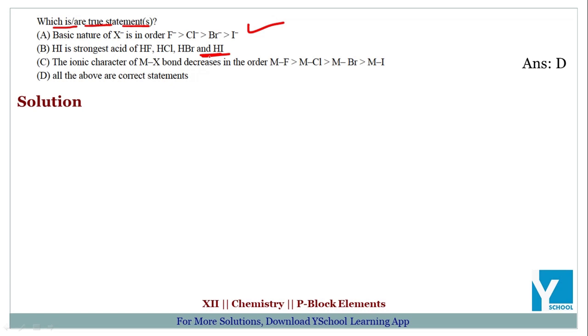The ionic radius of M-X bond decreases in this order. That's right, because iodine is the biggest, bromine is smaller, and fluorine is smallest. So the covalent radius is smaller and the ionic radius is smaller.